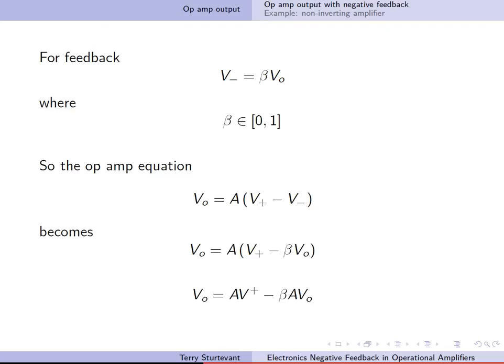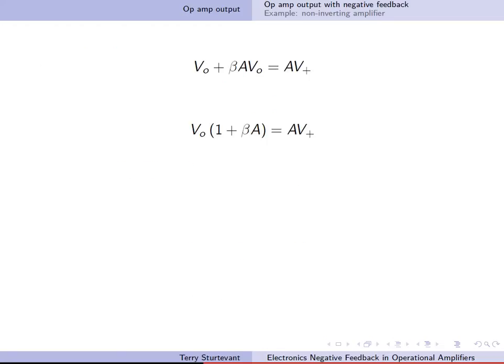So V out is the gain times V plus minus beta times the gain times V out. So with some algebra, we can show that V out is V plus times 1 over 1 over A plus beta.